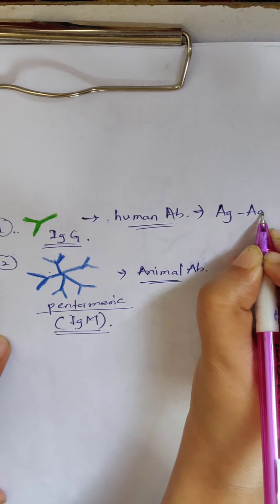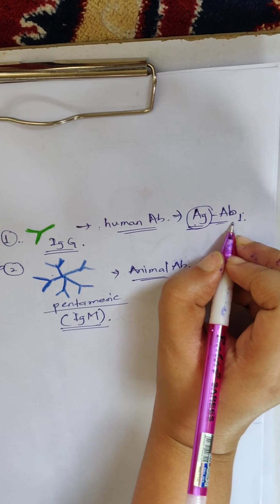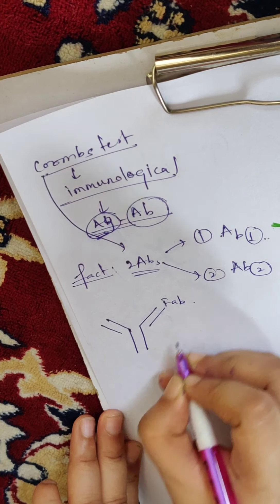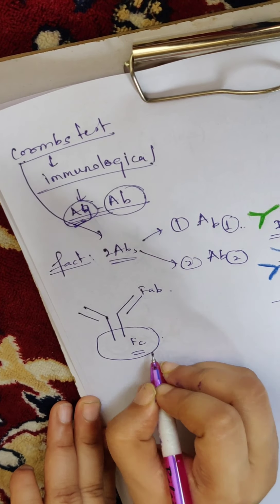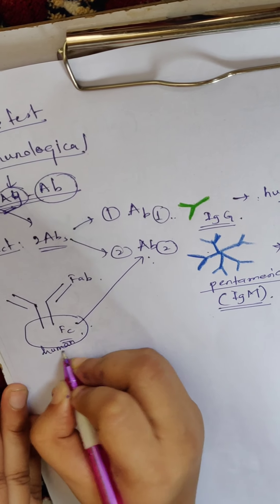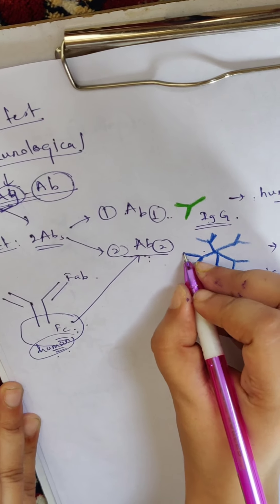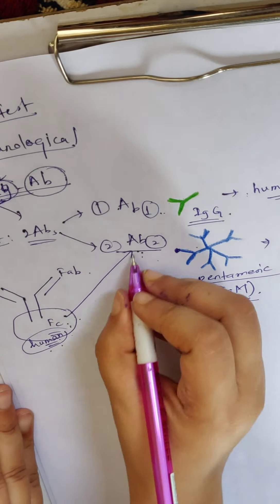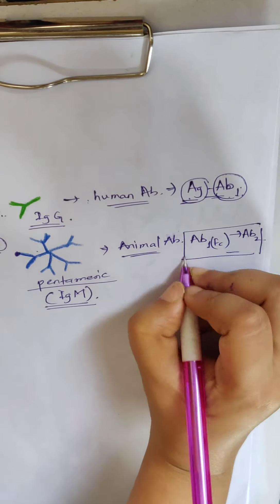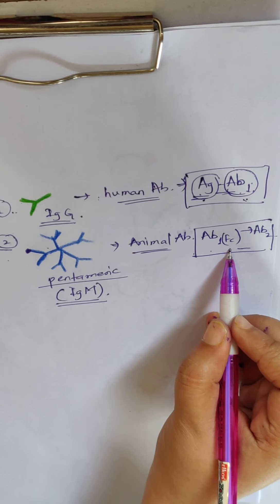The first antibody's characteristic feature is that it interacts with the antigen present on the cell. The antibody structure has a FAB portion and an FC portion. The FC component of antibody 1, which is of human species, acts as the target for antibody 2. So antibody 2 will be interacting with the FC component of antibody 1.